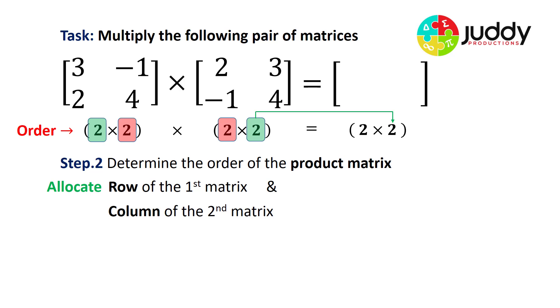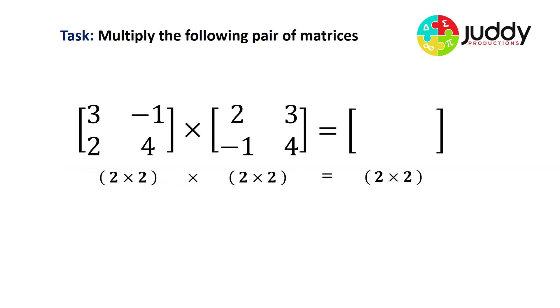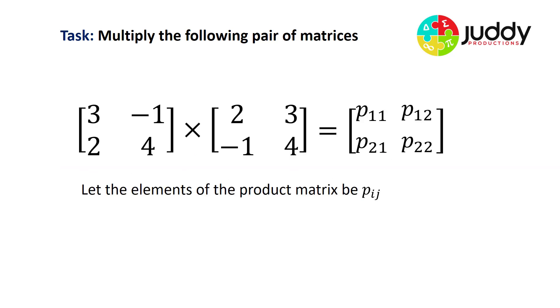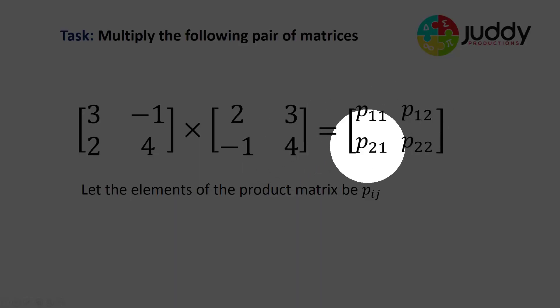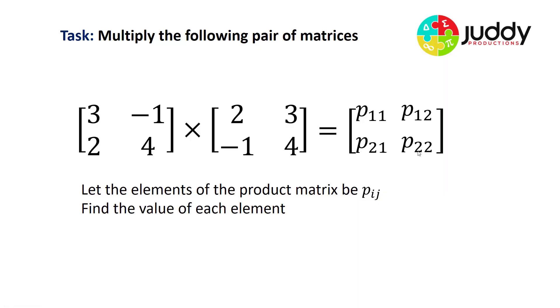From this we know the order of the product matrix will be a two by two matrix. Let's label the product matrix P, which means there are four elements: P11, P12, P21, and P22. Let's now find the value of each element.